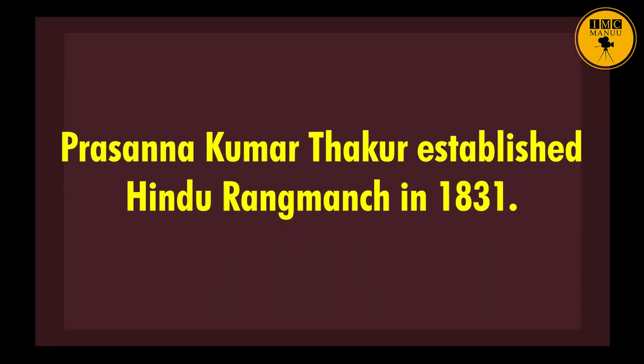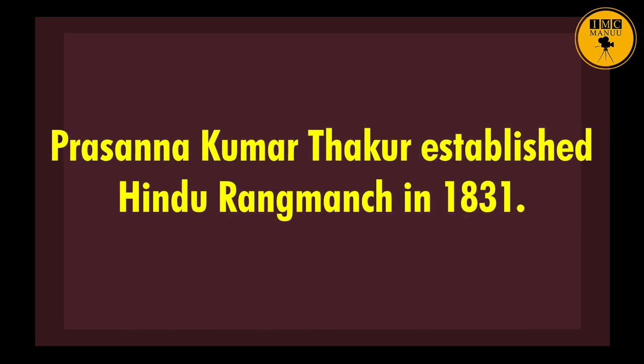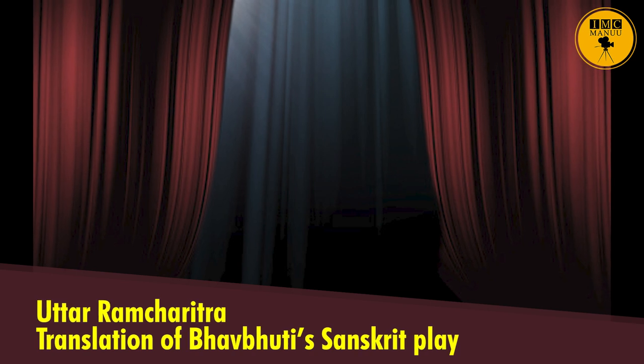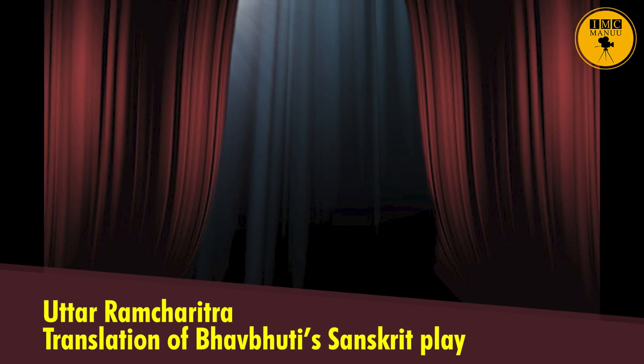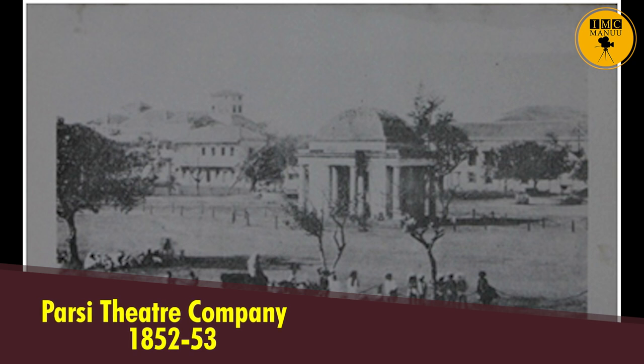Indian drama in English began with translations of Sanskrit dramas. 1831 is an important year to be remembered: Prasanna Kumar Thakur established the Hindu Rangmanch in this year, and that is where we find the beginning of Indian drama in English. In his theatre, the English translation of Bhav Bhuti's Sanskrit play Uttar Ram Charitra was staged. Another important development was the establishment of the Parsi Theatre Company, which happened in 1852 or 1853.